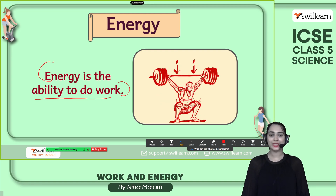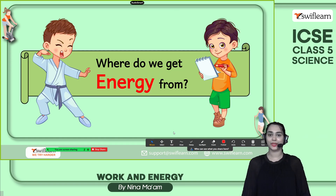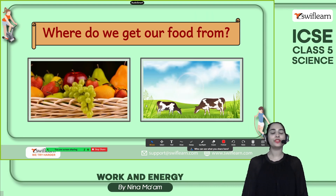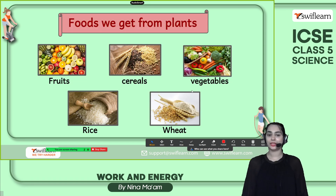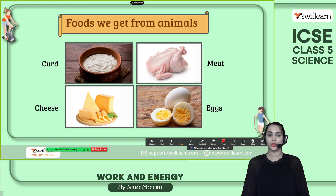Look at this person doing weight lifting — he needs a lot of energy in his body to be able to do it. So where do we get this energy from? We have several resources. The main resource is food. We get our food mainly from plants and animals. From plants we get fruits, vegetables, cereals, and rice. From animals we get milk, curd, cheese, eggs, and meat. From all these foods we get a certain amount of energy.